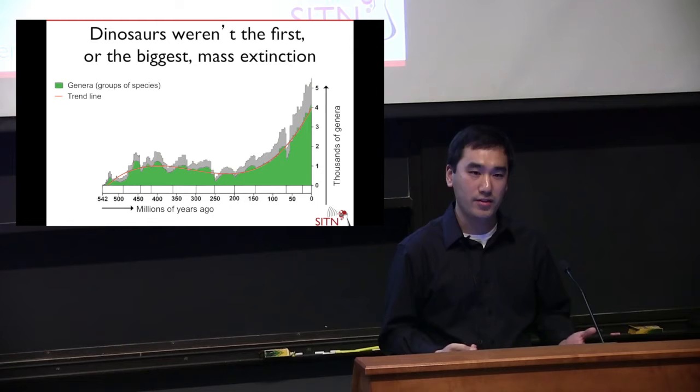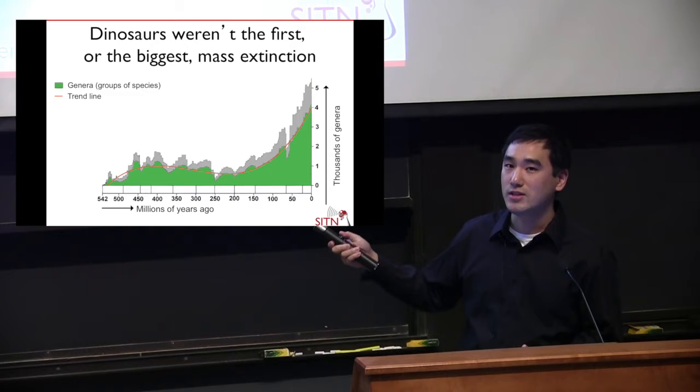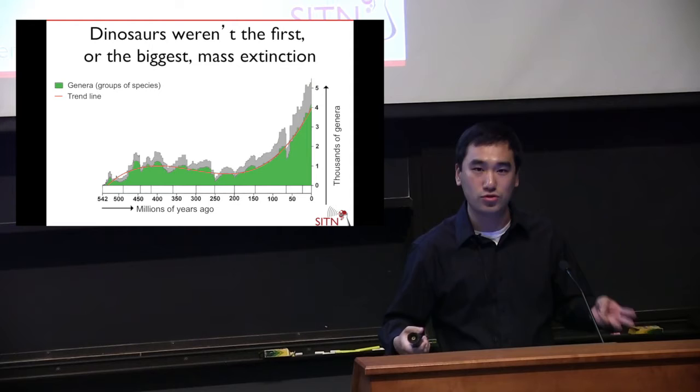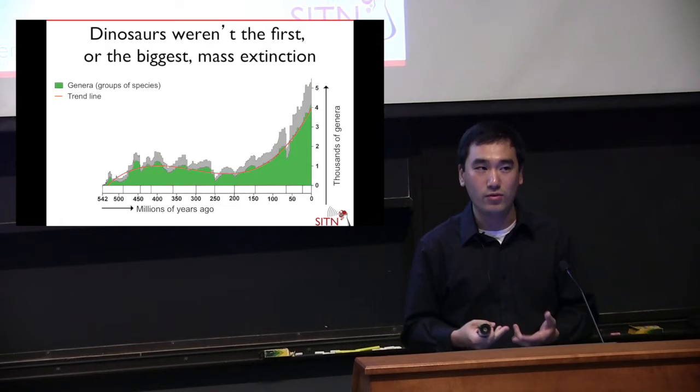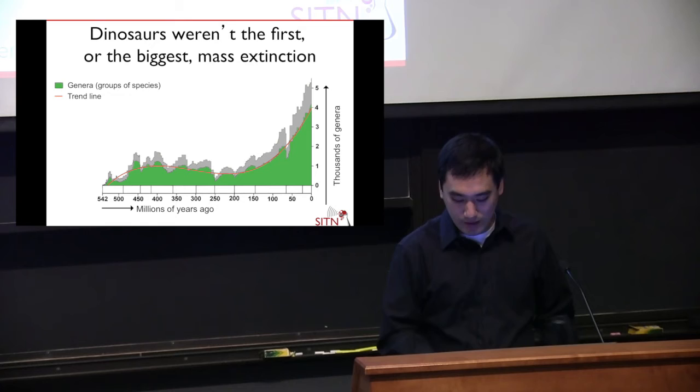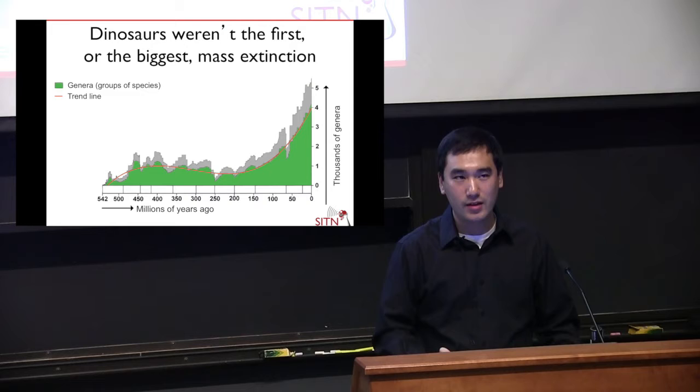This green area shows how many different species were on Earth at a given point in time. As you move from left to right — forward in time — you get more and more species diversity. Around here, the first plants appeared on land and started to diversify from mosses into ferns and trees. Then you develop amphibians, reptiles, birds, and mammals. But the graph isn't always going up — there are periodic dips, and five of them are significant. We call them the major mass extinction events, plus a couple of smaller minor mass extinction events.